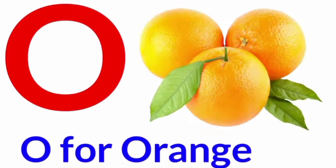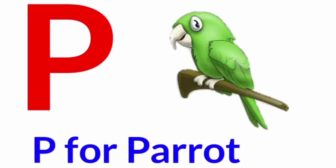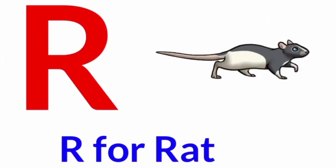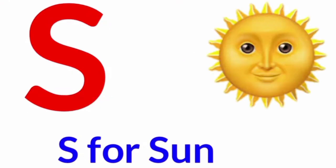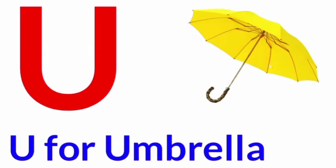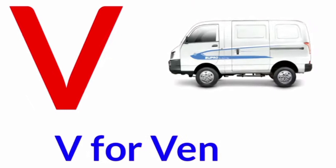O for orange. P for parrot. Q for queen. R for rat. S for sun. T for tiger. U for umbrella. B for dhen.